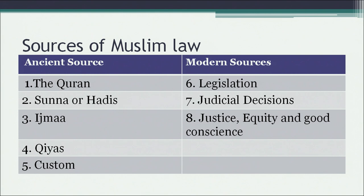The next ancient source is Qiyas — drawing an analogy over a particular problem from different sources to reach a solution. The last ancient source is custom — the practices followed over a period of time. For modern sources, the legislation includes the Shariat Act 1937, the Dissolution of Muslim Marriages Act 1939, and the Muslim Women Protection of Rights on Divorce Act 1986. Judicial decisions and principles of justice, equity, and good conscience are also important modern sources of Muslim law.